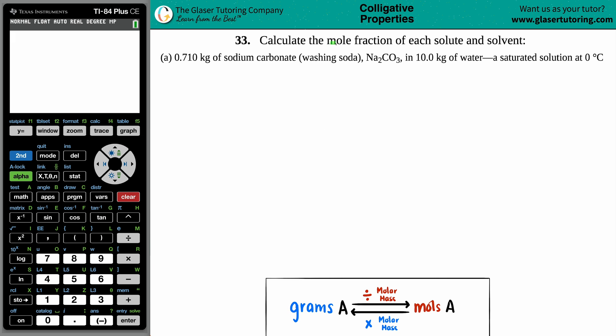Number 33. Calculate the mole fraction of each solute and solvent. We have letter A. In this case, we have 0.710 kilograms of sodium carbonate, which is washing soda, Na2CO3, and then this is in 10.0 kilograms of water, which is a saturated solution at 0 degrees Celsius.